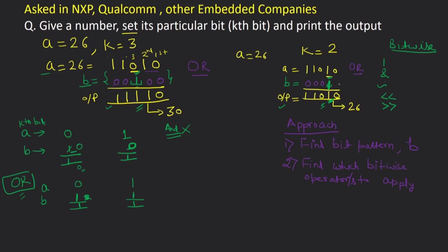For all the remaining bit positions, the bits should be copied as-is. If we place 0 in b at those positions: 0 OR 0 gives 0, and 1 OR 0 gives 1 — so the original bits are preserved. That means in pattern b, only the kth bit should be 1 and all remaining bits should be 0. Now how do we generate this b? We start with 1, which in binary is 0 0 0 1.